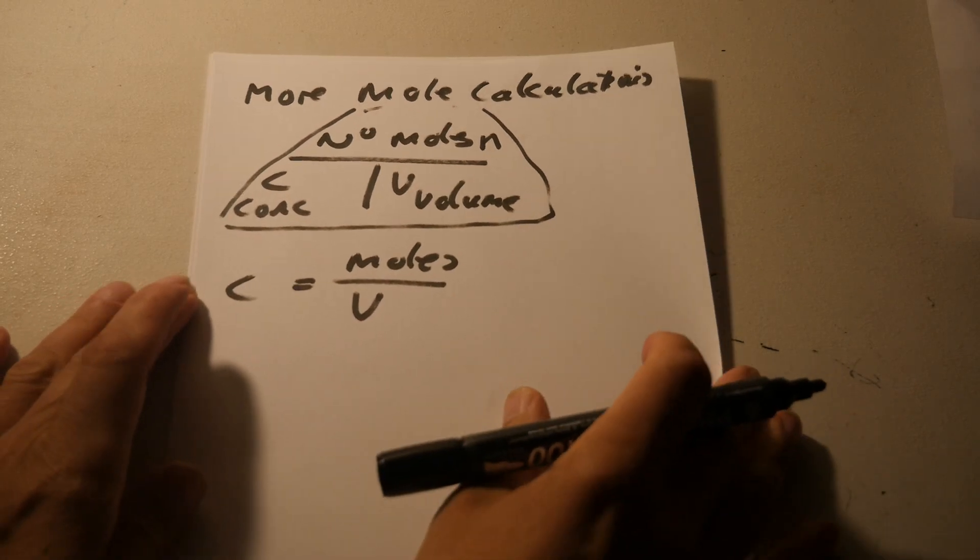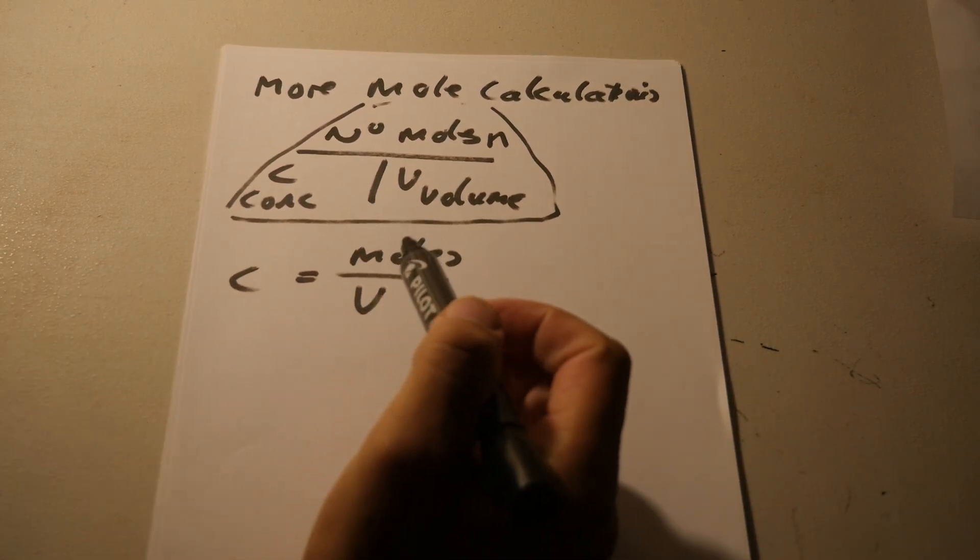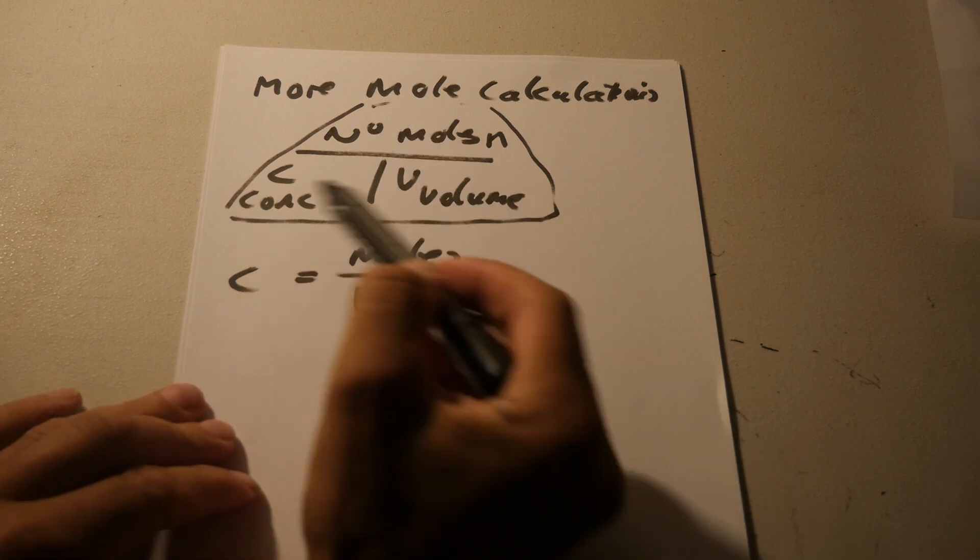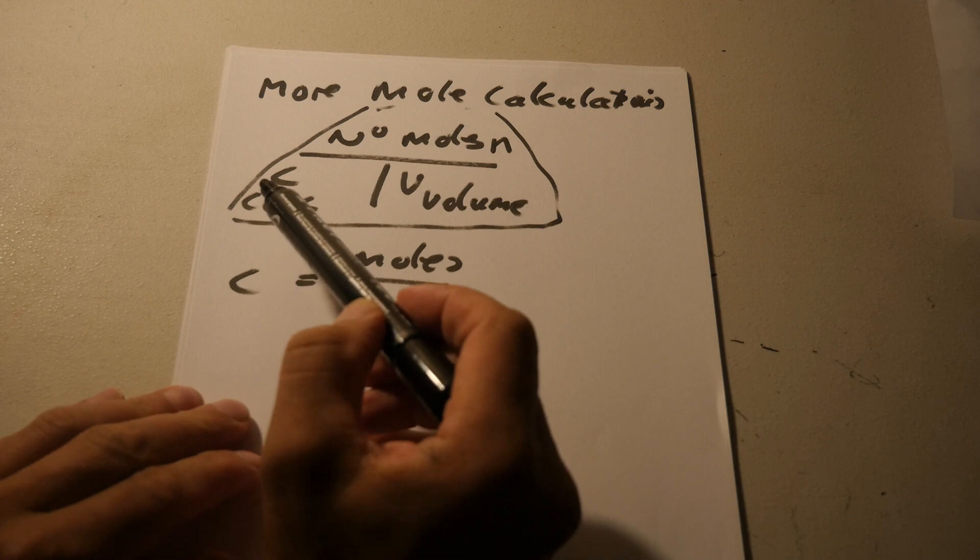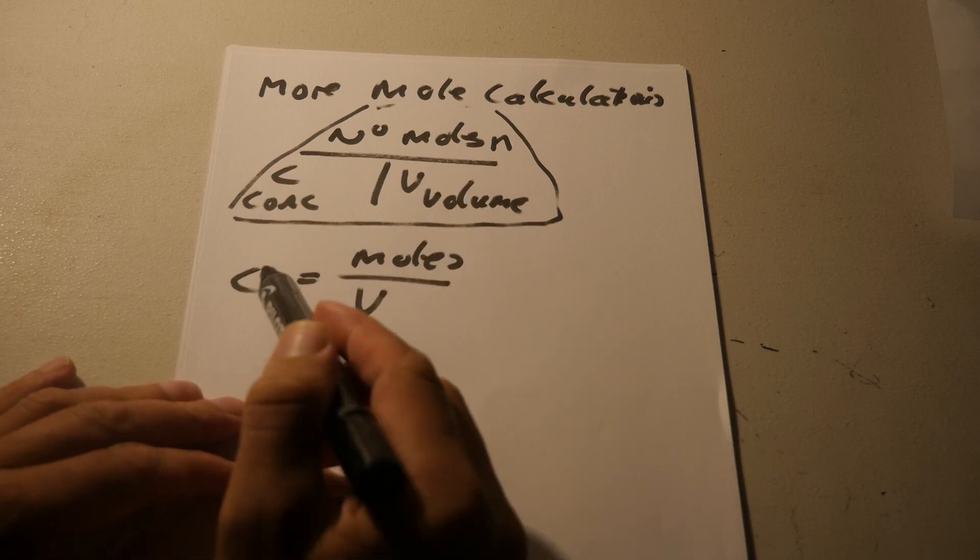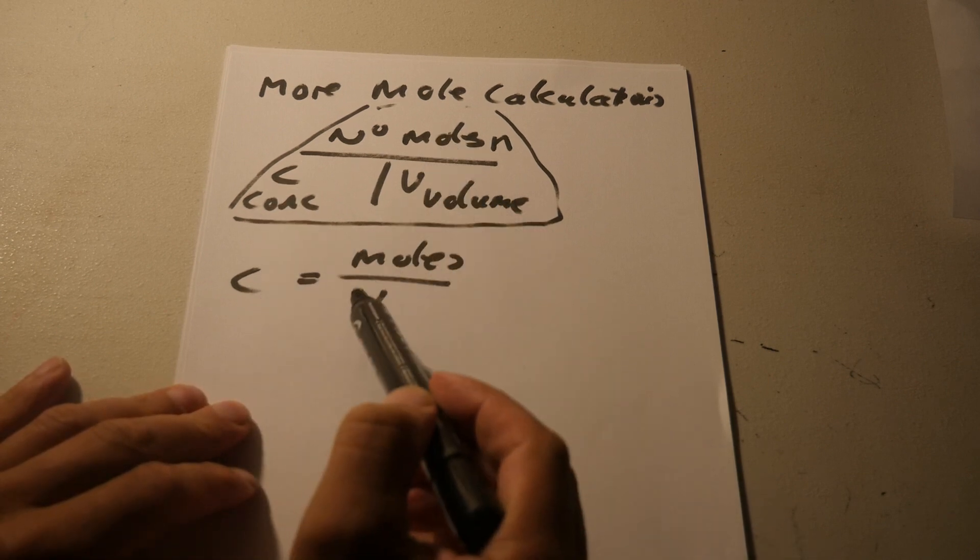Hello. So, more and more calculations. Number of mole. There's the triangle given in the course, which is number of moles and bottom, concentration, and volume. So concentration equals number of moles divided by volume.